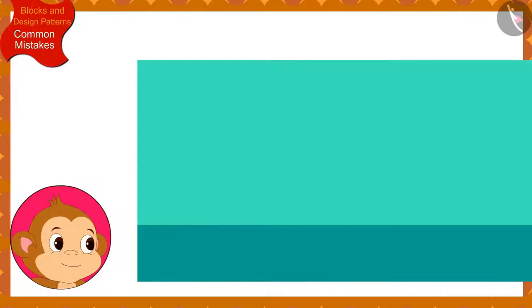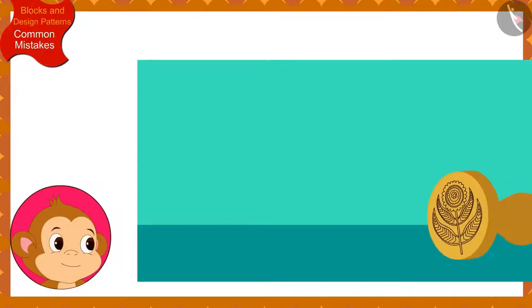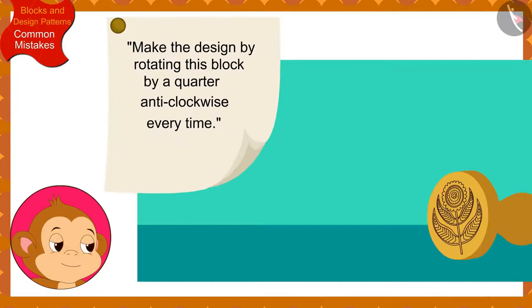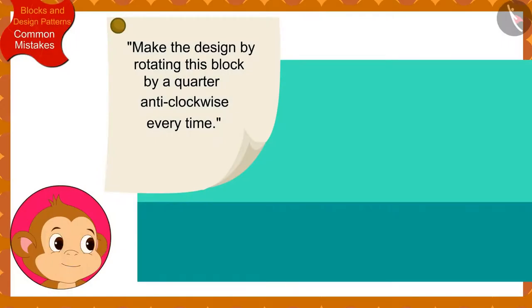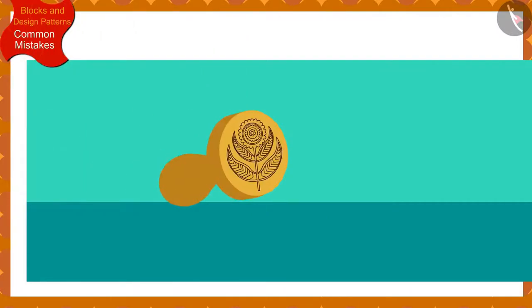Banno told Babban that he has to make the design using this block according to this rule on the first saree — make the design by rotating this block by a quarter anti-clockwise every time. Banno read the instructions written by Banno. This is so easy, thought Babban, and he quickly made this design using the block on the first saree.